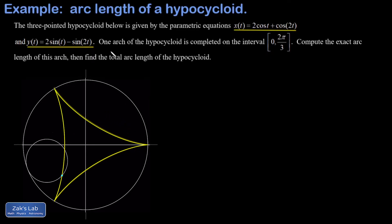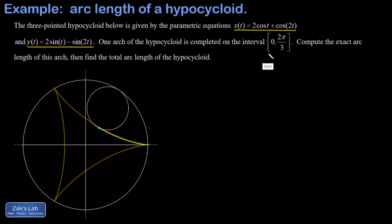We're told that one arch of the hypocycloid is completed on the interval 0 to 2π/3.